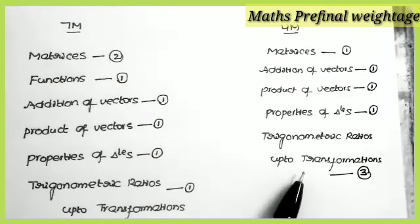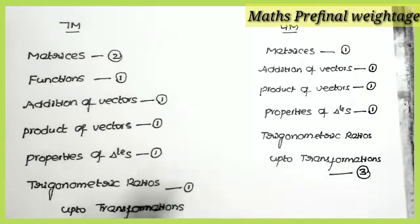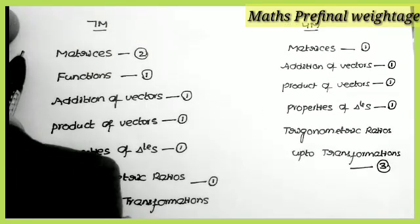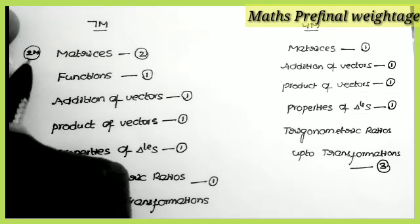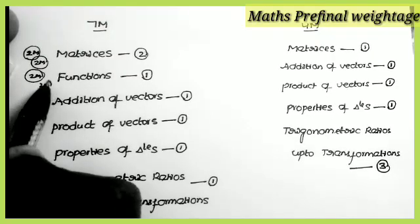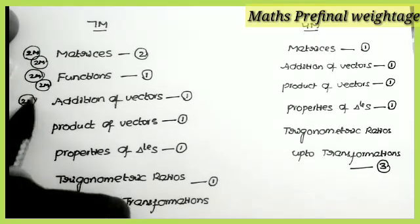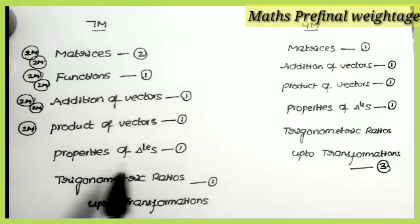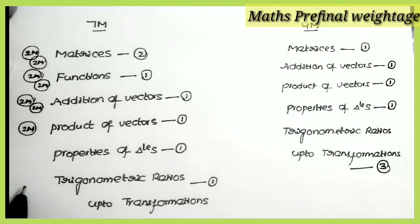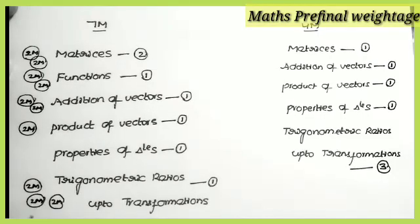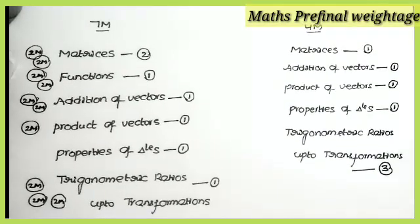From Addition of Vectors, two questions come in the examination. From Product of Vectors, only one question. Properties of Triangles has no two-mark weightage here. From Trigonometric Ratios, three questions come. The total is ten questions: one, two, three, four, five, six, seven, eight, nine, ten. The two-mark questions from Matrices and Functions are very very easy.